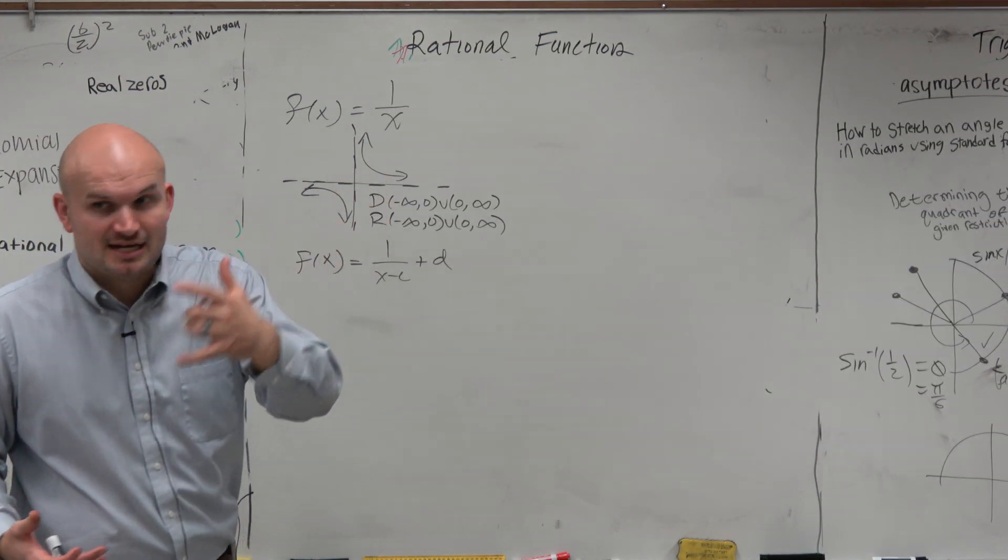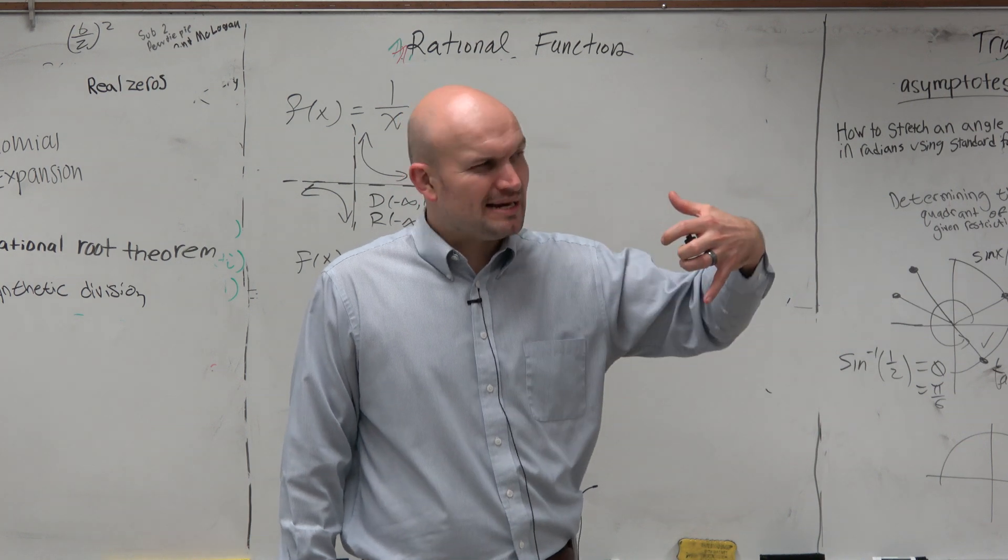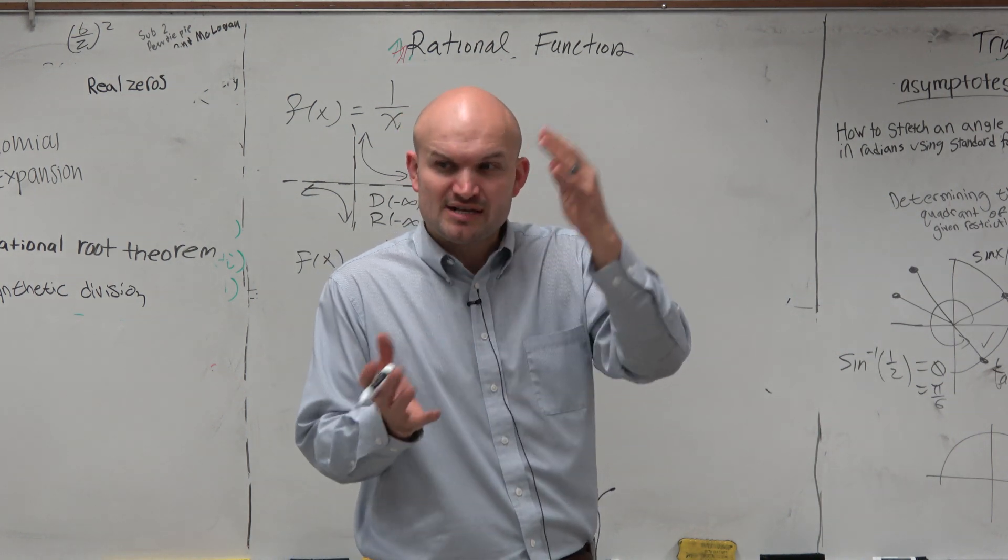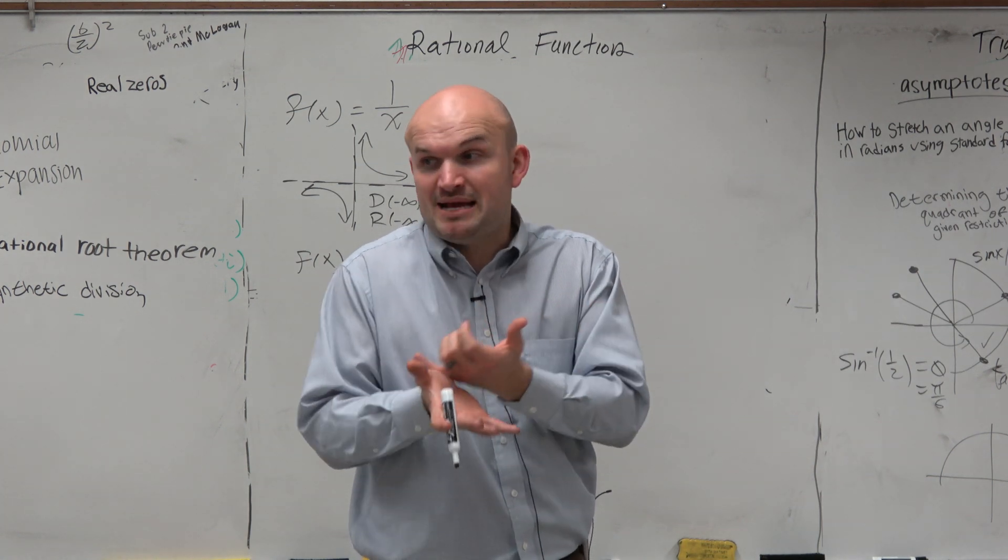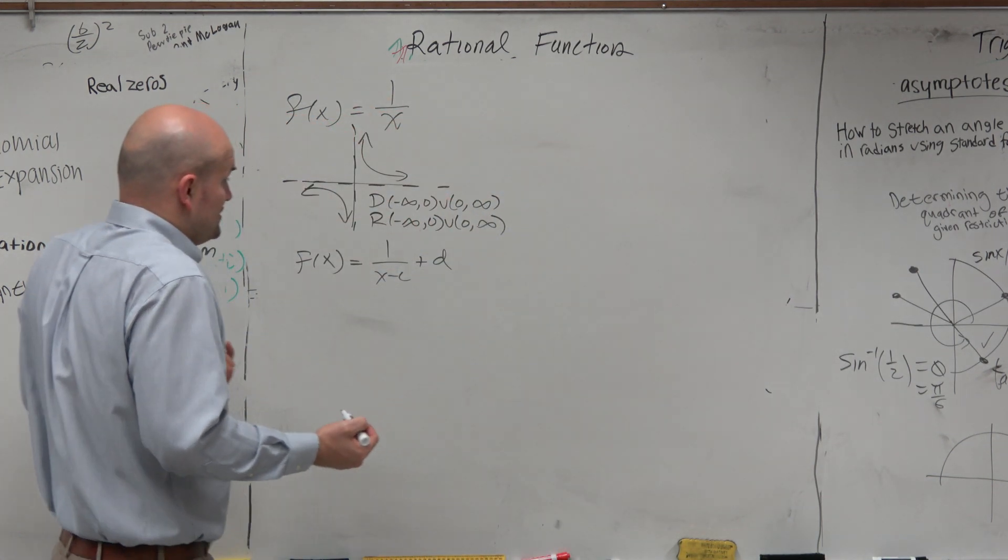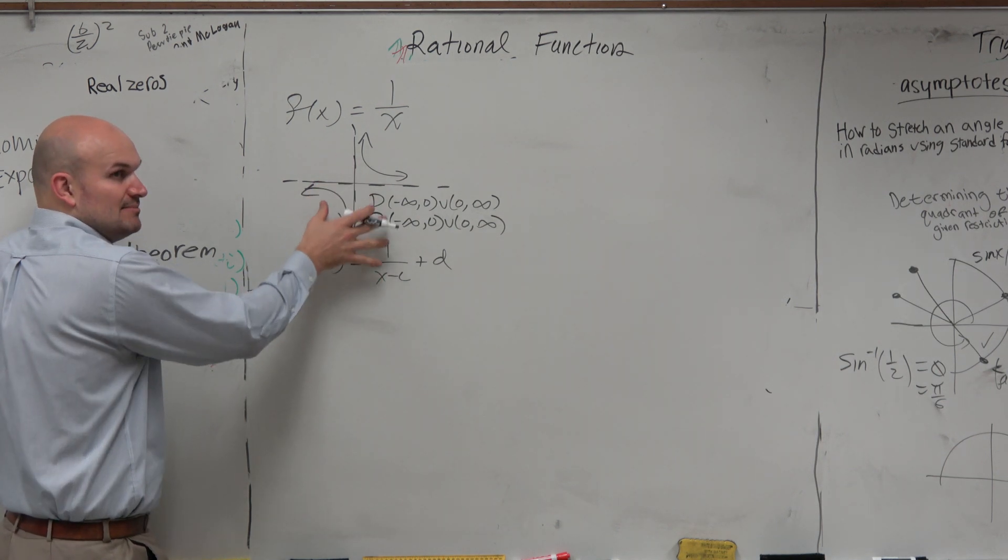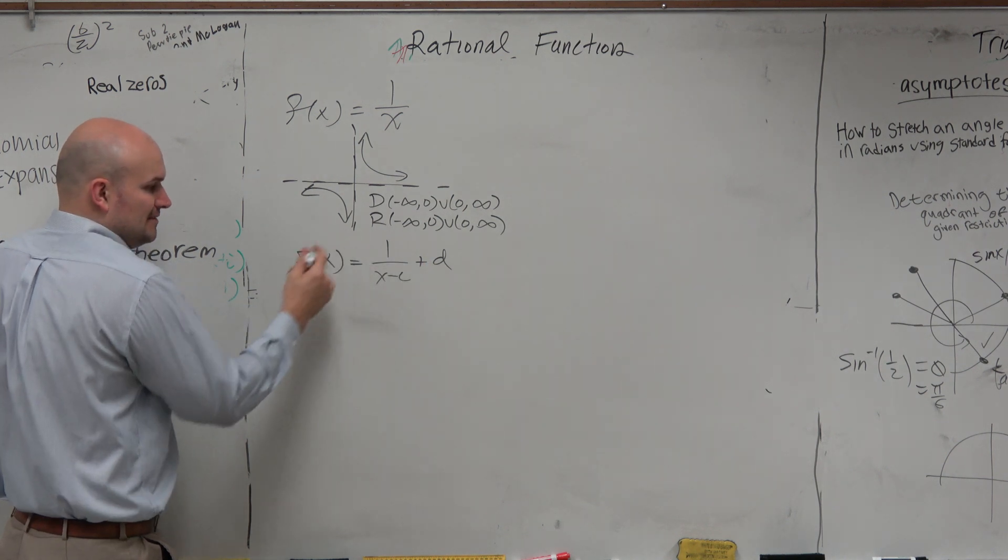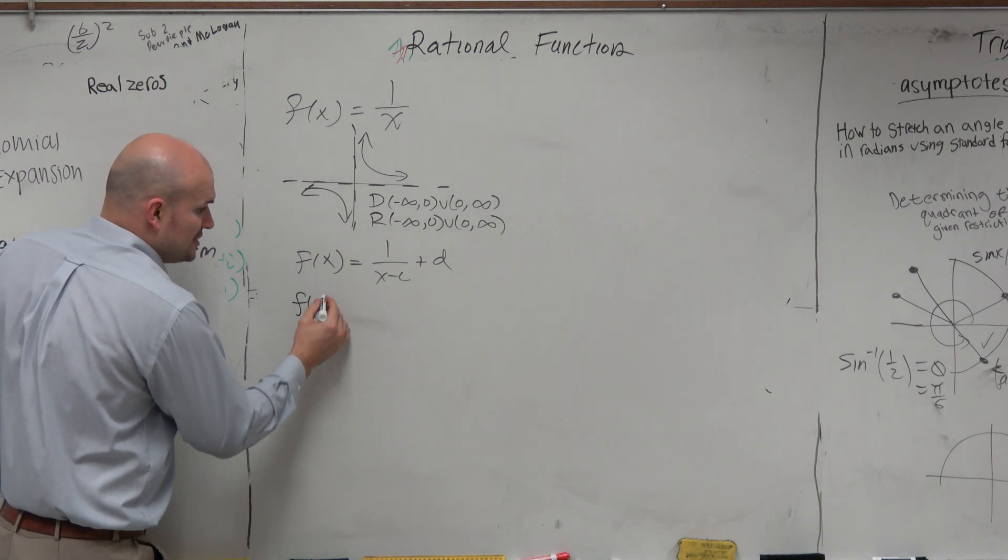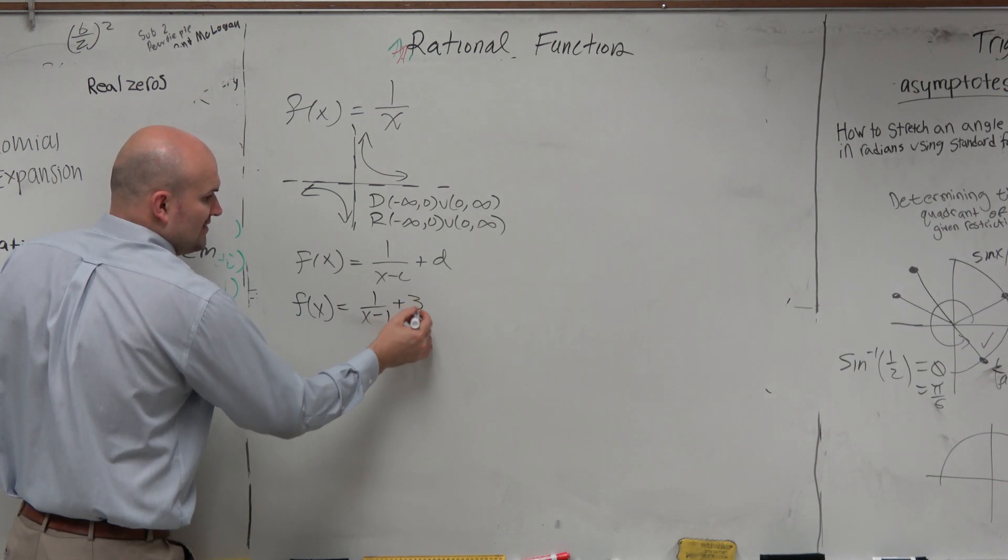If you do any reflections about the x or the y-axis, is the asymptotes changing? No. So in this chapter, we're not so much concerned about the transformations, but we're concerned about the transformations that affect the domain and the range. And obviously, you guys can see that A and B are not going to be impacting my asymptotes. The only thing that's really going to be impacting my asymptotes is C and D.